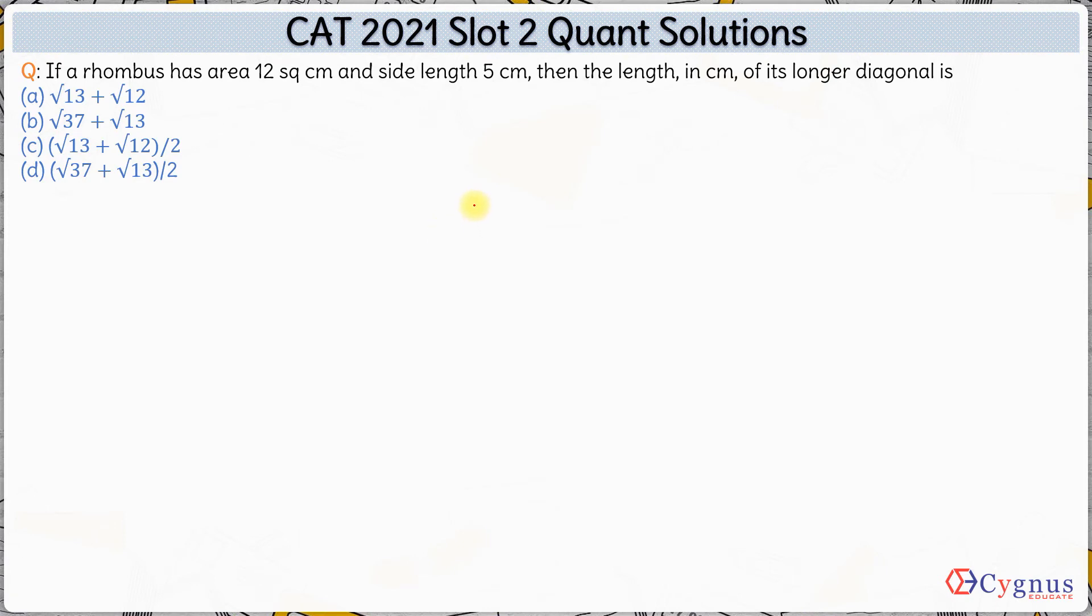Hi, so here in this question we are given that if a rhombus has area 12 square centimeter and side length of 5 centimeter, then the length in centimeter of its longer diagonal is how much.